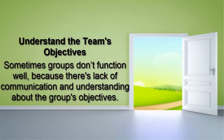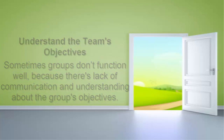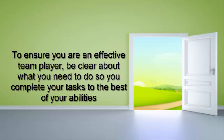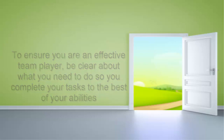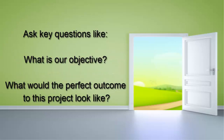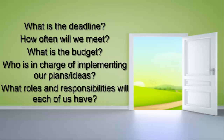Understand the team's objectives: sometimes groups don't function well because there's a lack of communication and understanding about the group's objectives. To ensure you are an effective team player, be clear about what you need to do so that you complete your tasks to the best of your abilities. Ask key questions like: What is our objective? What would the perfect outcome to this project look like? What is the deadline? How often will we meet? What's the budget? Who's in charge of implementing our plans and ideas? What roles and responsibilities will each of us have?